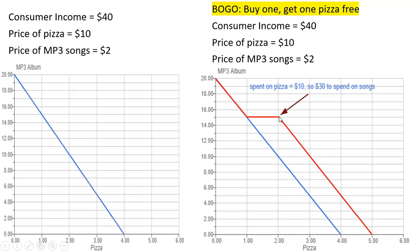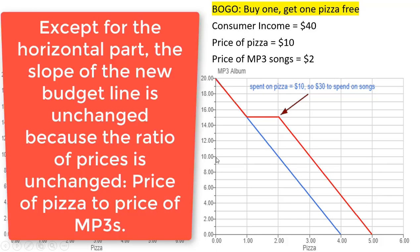From here on out, if we wanted to buy another pizza, we'd have to give up five songs. So right over here, we're spending $20 on pizza — we're getting three pizzas but one of them was free. Spending $20 on pizza leaves us with $20 to buy MP3s. 20 divided by 2 is 10.